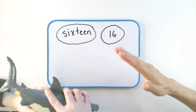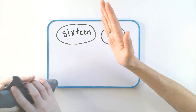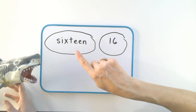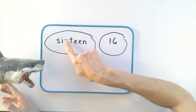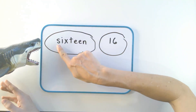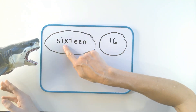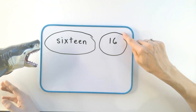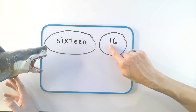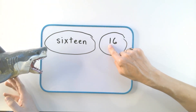Well done, Bitey. Can you give me a high five? Bitey, in English a word is made up of letters. In maths, a number is made up of digits.